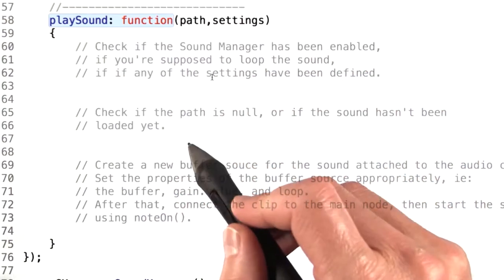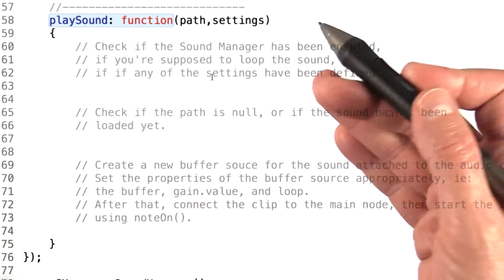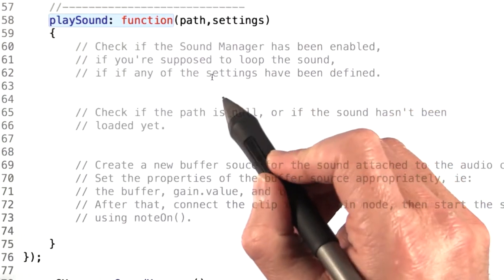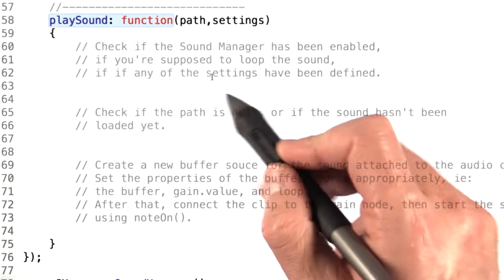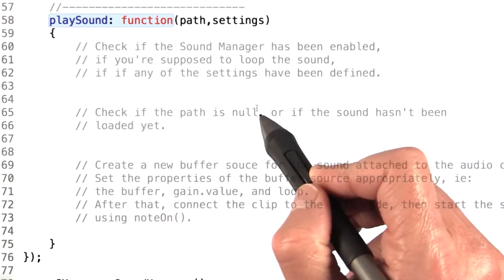For our purposes, let's say the settings dictionary contains a boolean looping for checking whether we want to loop an effect and volume to set our initial gain at.